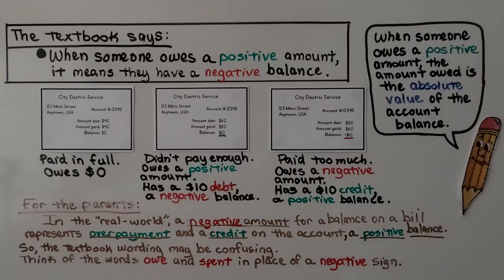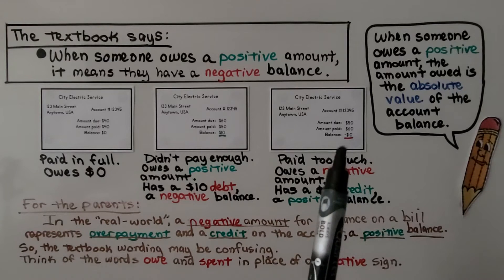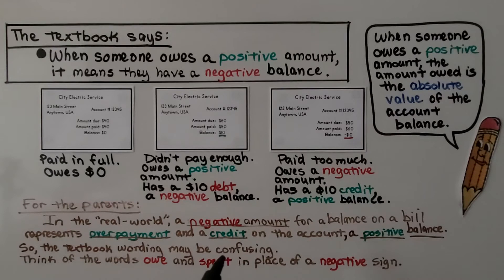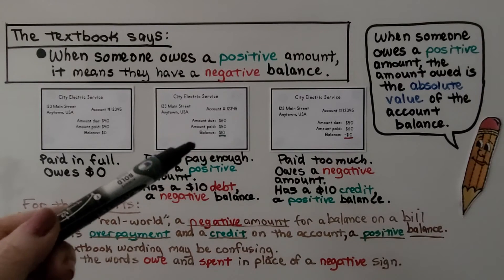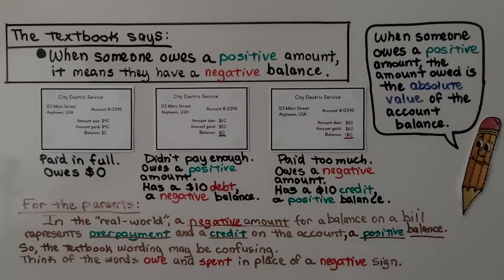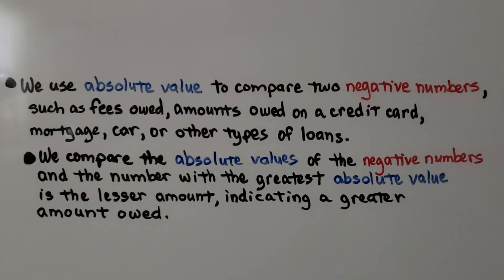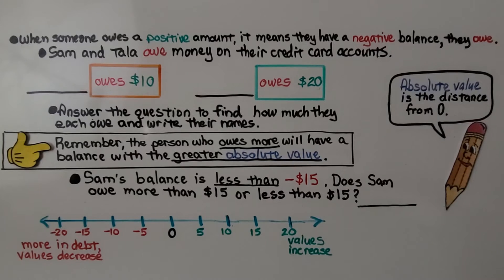For parents: if this is still confusing for your student, in the real world a negative amount on a balance represents an overpayment — a credit on the account, a positive balance. Think of the word 'owe' or 'spent' in place of a negative sign. If it says owe $10, that's negative $10. So when someone owes a positive amount, that means they have a negative balance and they have a debt. We use absolute value to compare two negative numbers such as fees owed, credit card balances, mortgages, car loans, or other types of loans. The number with the greatest absolute value is the lesser amount, indicating a greater amount owed.